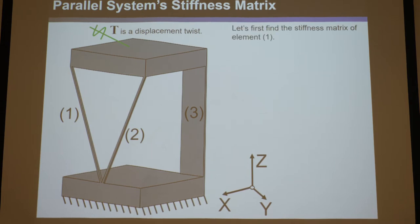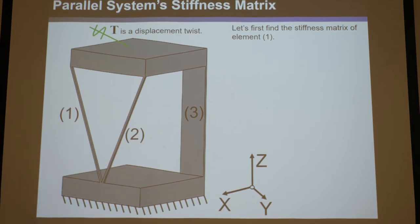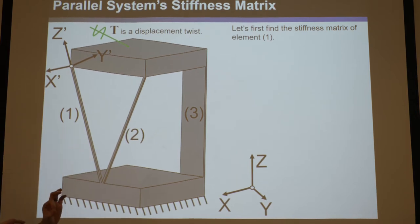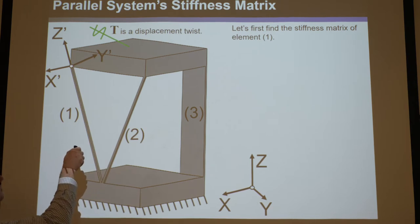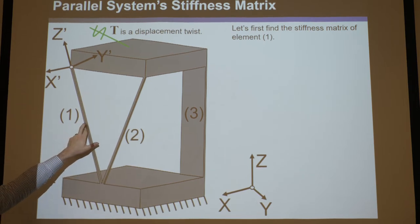Let's find the stiffness matrix of element one, forgetting elements two and three for now. We define a coordinate system at the location where that element attaches to the stage — right in the center of its cross-section, which is a square. You want your z-prime going from the element into the stage, away from the inside of the element. Then arrange x and y to follow the right-hand rule and point normal to the faces — those are the principal axes.